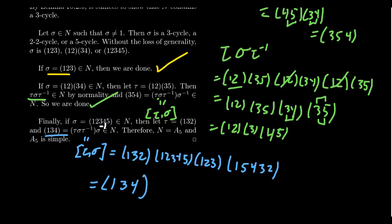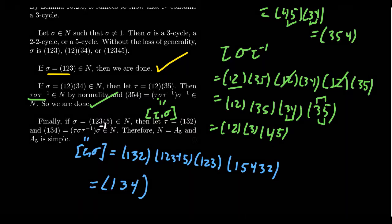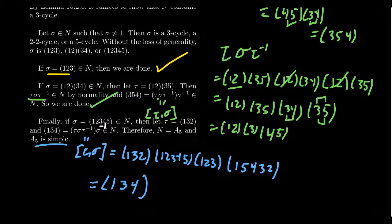So in the 5-cycle case, N contains a 3-cycle, and therefore by the previous lemma it must be all of A₅. This proves that A₅ is a simple group.